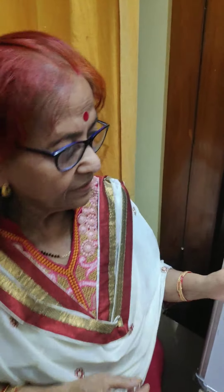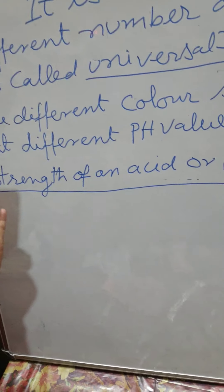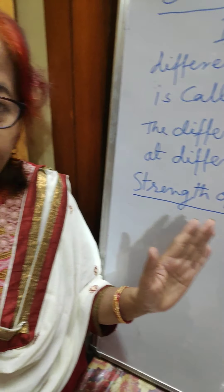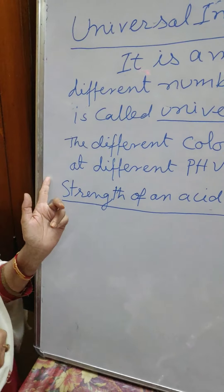Now next one: the strength of an acid or base. Strength of an acid or base depends on the number of H ions and OH ions produced by them. If a large number of H ions are produced, that is a strong acid. If a large number of OH ions are produced, that is a strong base.